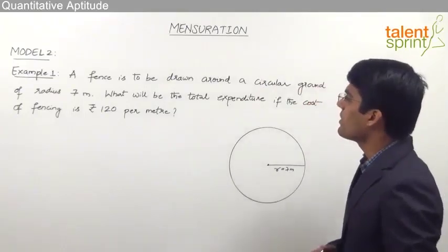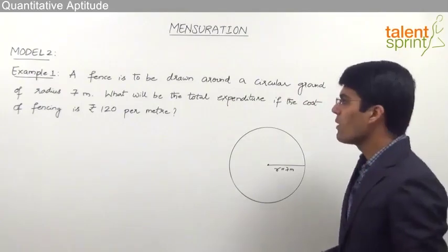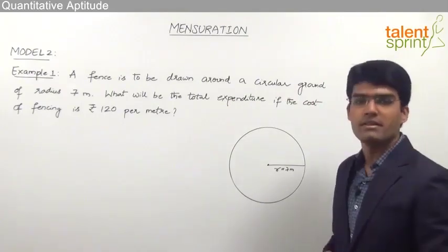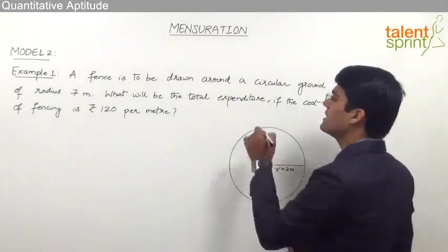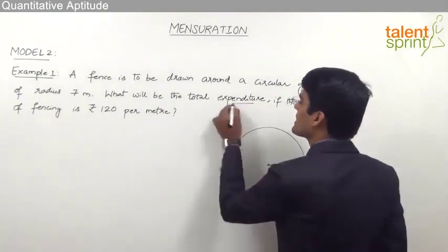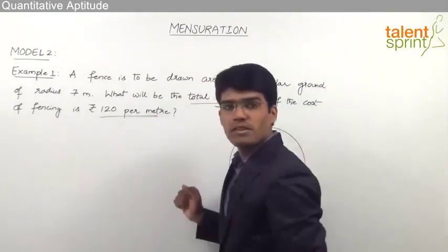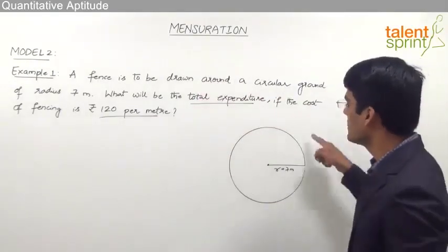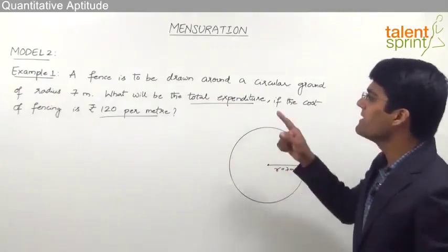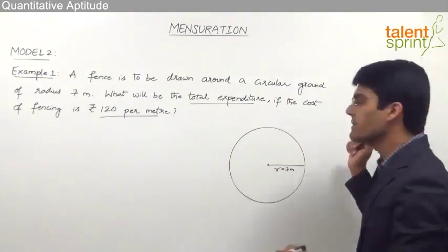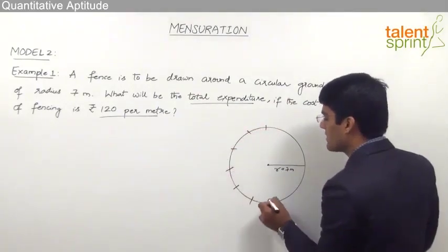A fence is to be drawn around a circular ground of radius 7 meters. What will be the total expenditure if the cost of fencing is rupees 120 per meter? As given in the question, there is a circular ground with radius 7 meters, and a fence has to be put around this circular ground.